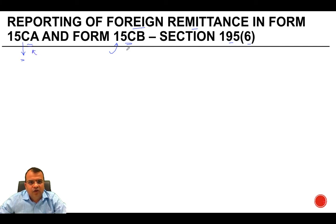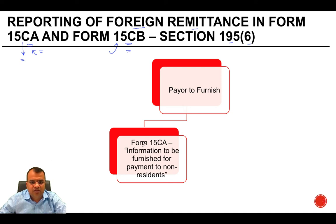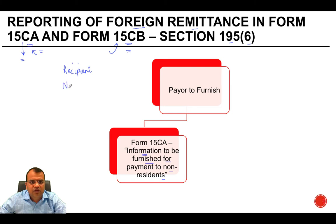Generally, the content of Form 15 CB is incorporated into Form 15 CA. The payer has to furnish Form 15 CA, which is titled 'Information to be furnished for payment to non-resident.' We will look at this form in detail in the subsequent part of this presentation. Broadly, it contains the details of the recipient, the nature of the payment, the amount to be paid, and how the tax has been determined.